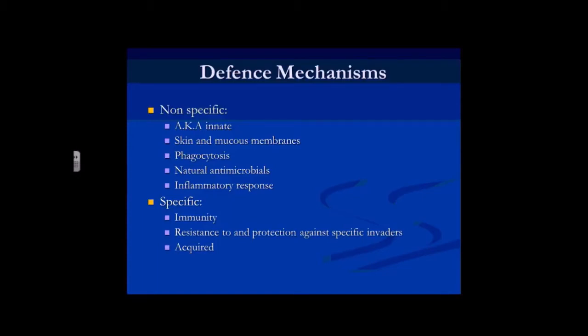Specific defence mechanisms are immunity, and these are the things we're going to talk about today. It's about resistance to specific invaders — identifying them and producing something that will help us respond to that antigen, not only for that one time, but also if we ever encounter it again. Immunity is always acquired, meaning we get it from something else. We are born with a certain amount of immunity because it passes from mother to fetus within the womb.